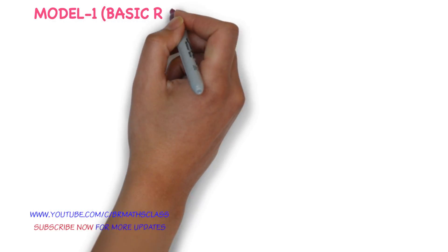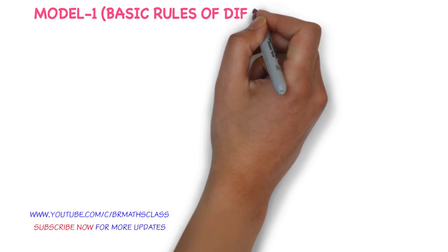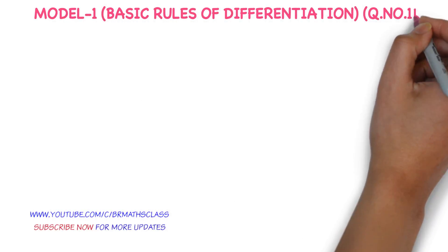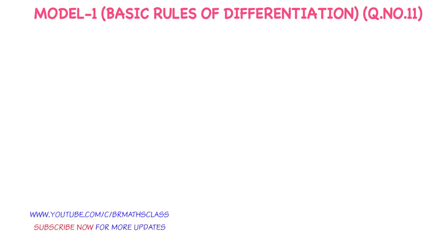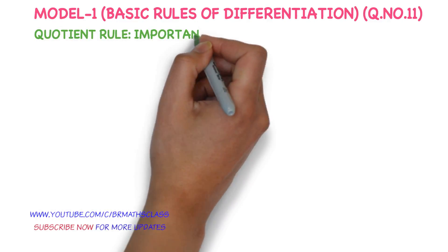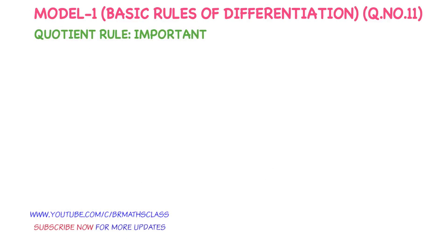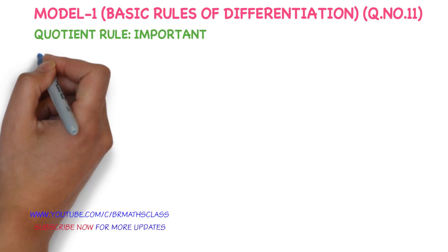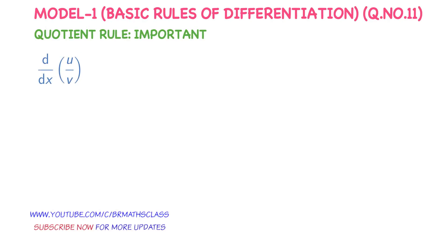Model 1: Basic Rules of Differentiation. In this question we learn how to use the quotient rule. Quotient rule is a formula which is very important and we use it very frequently throughout this differentiation chapter.